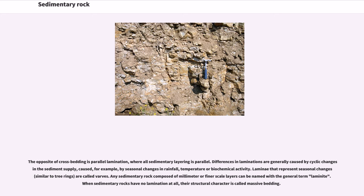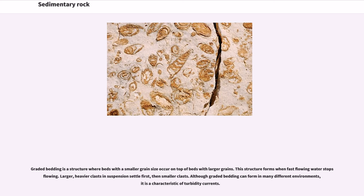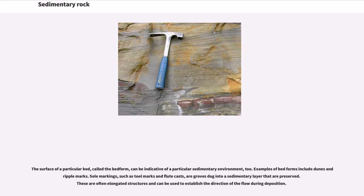Any sedimentary rock composed of millimeter or finer scale layers can be named with the general term laminite. When sedimentary rocks have no lamination at all, their structural character is called massive bedding. Graded bedding is a structure where beds with a smaller grain size occur on top of beds with larger grains. This structure forms when fast-flowing water stops flowing — larger, heavier clasts in suspension settle first, then smaller clasts. Although graded bedding can form in many different environments, it is a characteristic of turbidity currents. The surface of a particular bed, called the bed form, can be indicative of a particular sedimentary environment.